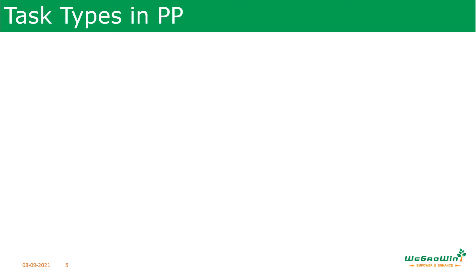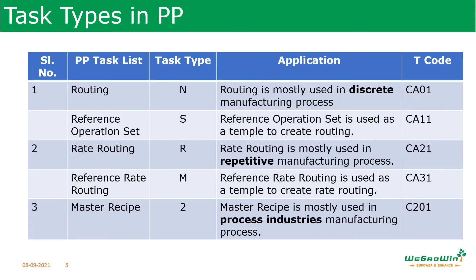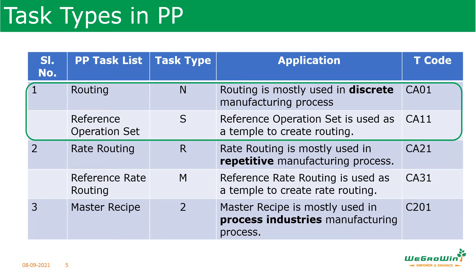There are basically three production types discussed in our first lesson. Production types are based on the frequency of production, the complexity of production, and the stability of production. The three types are: discrete manufacturing, production planning in process industries, and repetitive manufacturing. For each production type there are different routings. For discrete manufacturing, standard routing is used, created with transaction CA01, and the task type is N. What task types are and how to use them will be discussed in the next lesson.